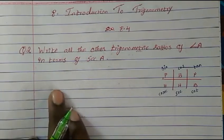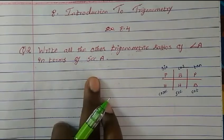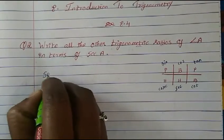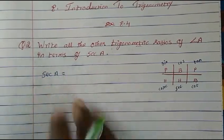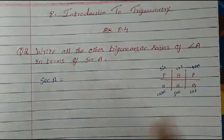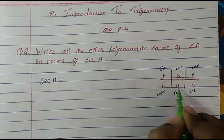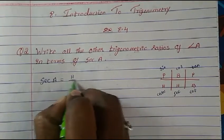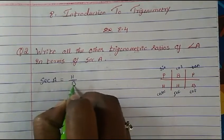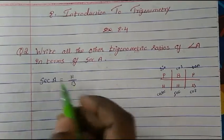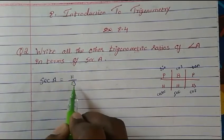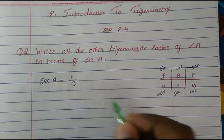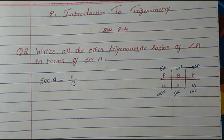First, let me show you the complete the triangle method. So sec A is actually hypotenuse upon base. That means we have the hypotenuse and base, and we need to find the perpendicular. Let us draw a right angle triangle.